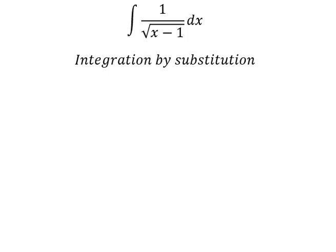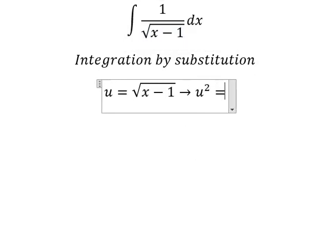So I will put u equals to this one. Later, we put the square for both sides so we can cancel the square root.